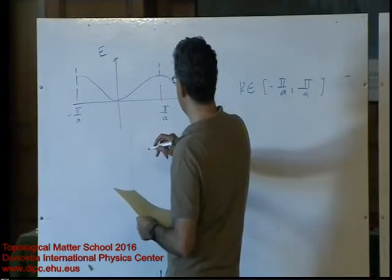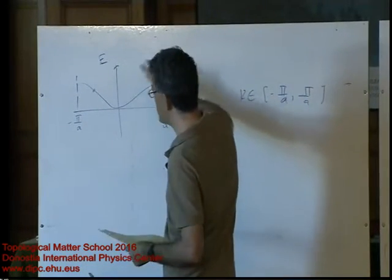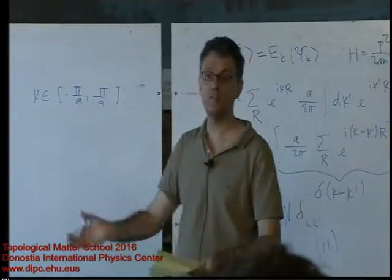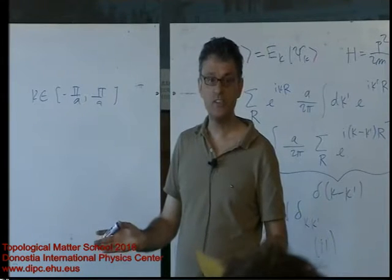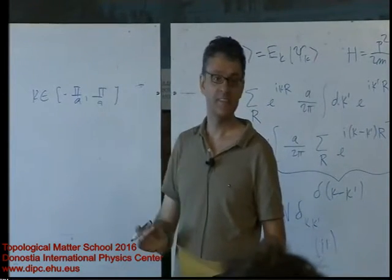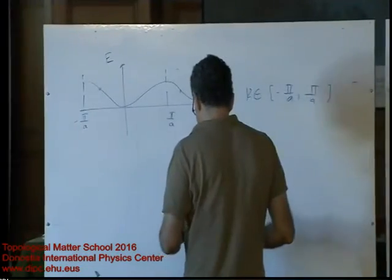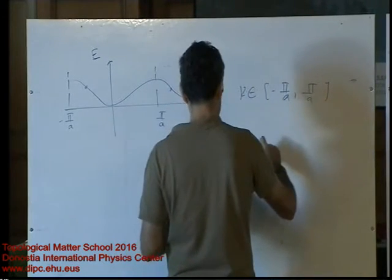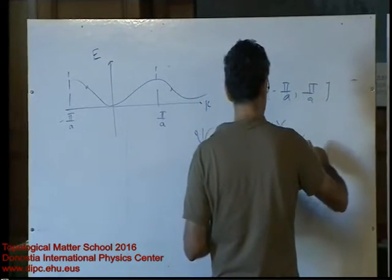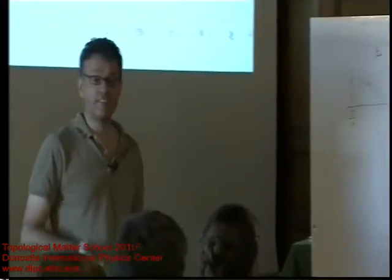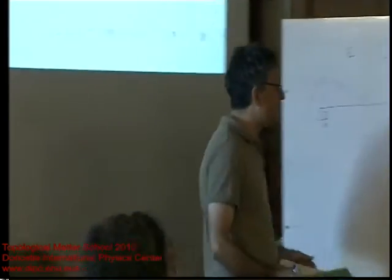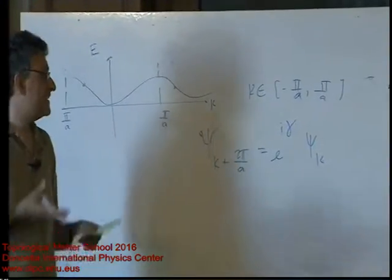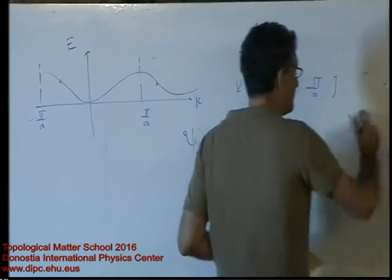If you solve the eigenvalue problem at one zone boundary and at the other, you're solving the same problem. So if you solve it today and tomorrow, you should get the same results — but not quite, because in quantum mechanics you're allowed to change the phase. Wave functions are only defined up to a phase, so in all generality one is allowed to have a k-dependent gauge phase gamma(k). A periodic gauge is the choice where we set this condition such that the wave functions are periodic across the Brillouin zone boundary.